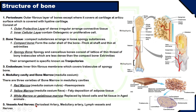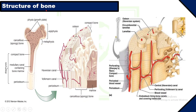Vessels include the periosteal artery found in tiny canals of bones, the medullary artery or nutrient foramen found at the shaft of the bone, and lymph vessels and nerves found at the periosteum of the bone.